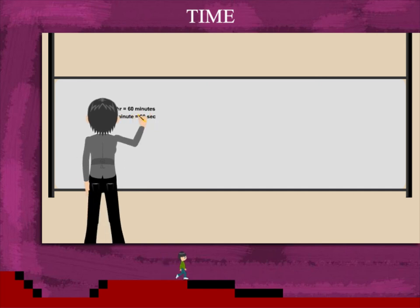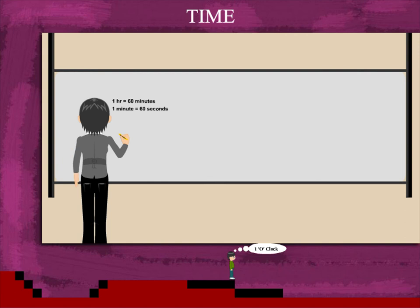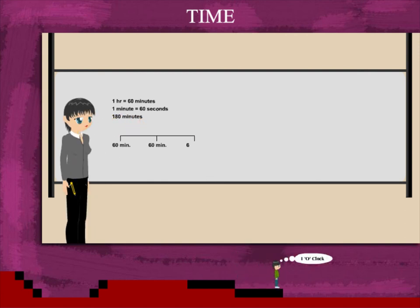How much is 180 minutes? Well, 180 minutes is equal to 3 hours of 60 minutes each.